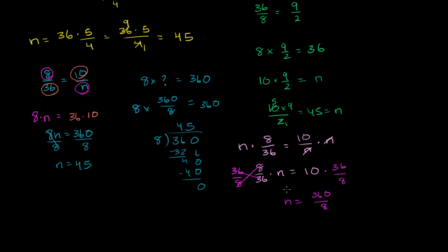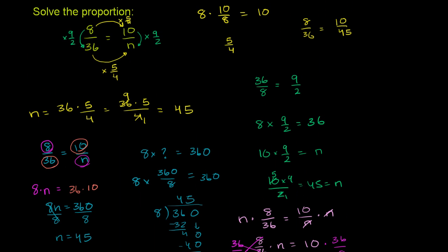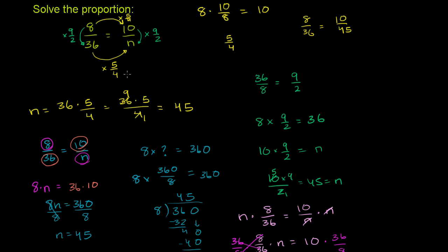Notice we're getting the exact same value as with cross-multiplying. With cross-multiplying you're actually doing two steps: multiplying both sides by n to get 8n, then multiplying both sides by 36. At the end when you simplify, you get the same answer. So those are all different ways to solve this proportion. Probably the easiest way to do it in your head is either looking at what you multiply the numerator by and doing the same to the denominator, or cross-multiplication.